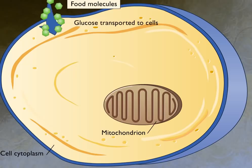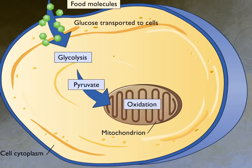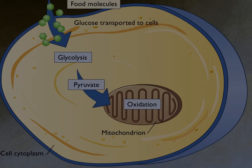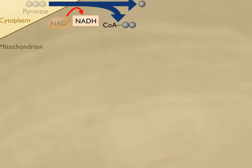During glycolysis, glucose is broken down to pyruvate. A two-carbon fragment of pyruvate is used to form acetyl-CoA. The acetyl-CoA enters the Krebs cycle, which occurs in the mitochondrion.